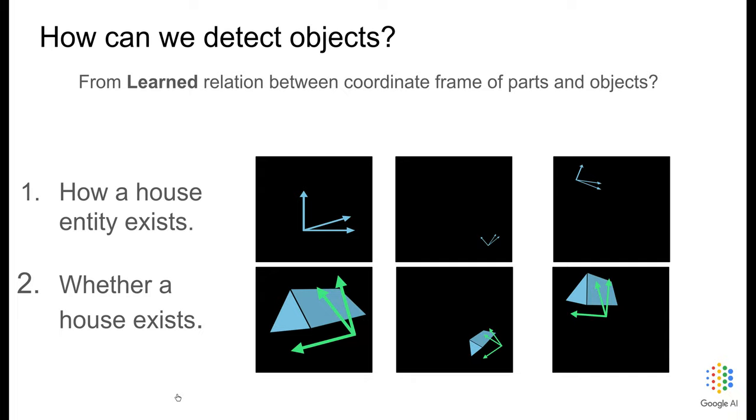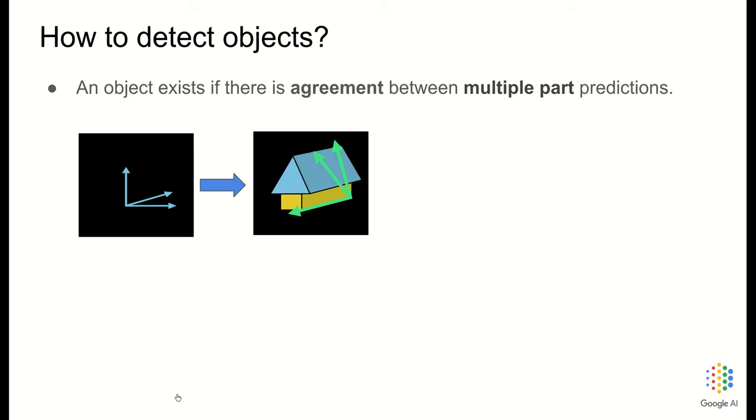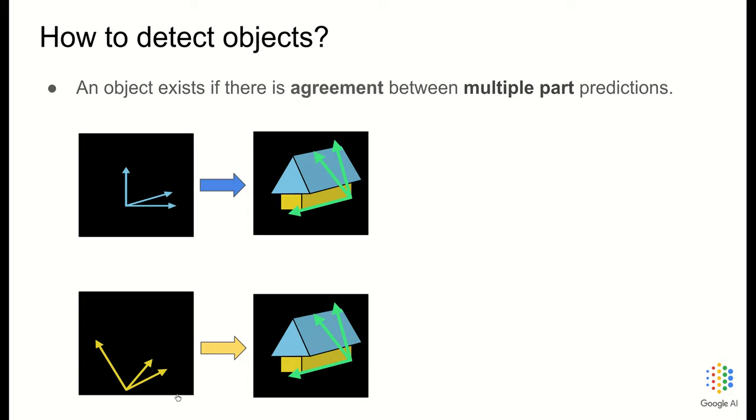But how can we detect objects? Is any roof a house? No, a house needs walls. So a house exists if it has both roof and walls. Suppose we know how to transform a roof capsule to a house capsule. We also know how to transform a wall capsule to a house capsule. But the house capsule should only be active if and only if the prediction matches between the roof capsule and the wall capsule. In other words, roof capsule and the wall capsule should agree on their prediction for the house. And then the house exists.